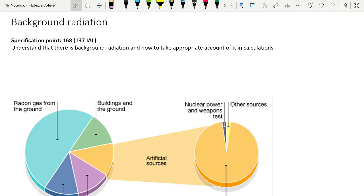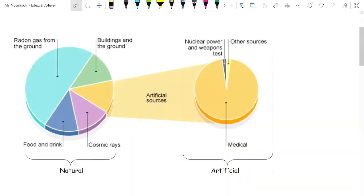The specification says understand that there is background radiation and how to take appropriate account of it in calculations. This is the important part because we already know about background radiation from GCSE.